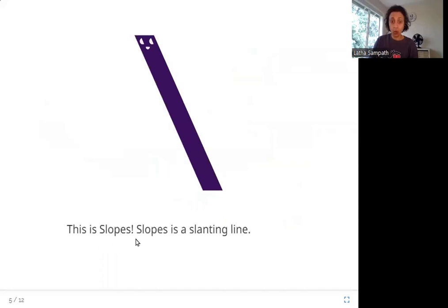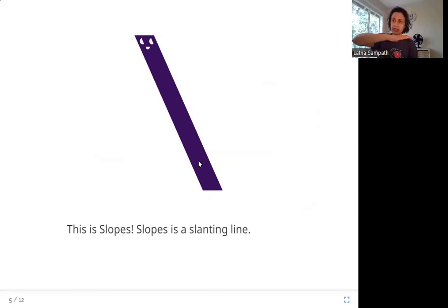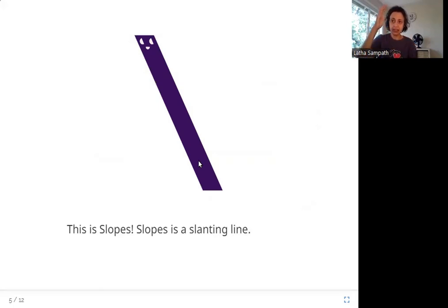This is Slopes. Slopes is a slanting line. Slopes is not straight — straight is Akhara. Slopes is not sleeping — sleeping is Linio. Slopes is slanting.